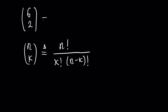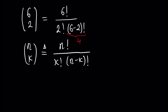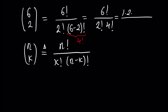Using this definition we can write that six choose two equals 6 factorial divided by 2 factorial and (6 − 2) factorial, which is 4 factorial. So it is 6 factorial divided by 2 factorial and 4 factorial. Now, 6 factorial is 1 × 2 × 3 × 4 × 5 × 6.